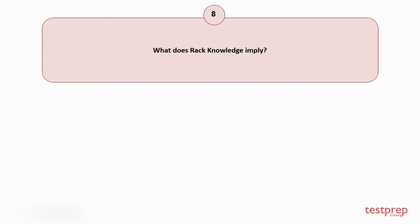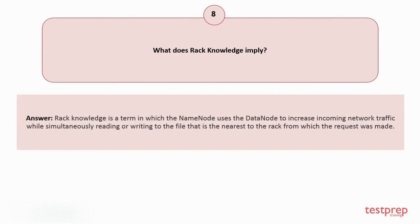Question number 8: What does rack knowledge imply? Your answer is: Rack knowledge is a term in which the name node uses the data node to increase incoming network traffic while simultaneously reading or writing to the file that is the nearest to the rack from which the request was made.